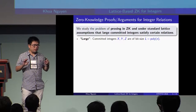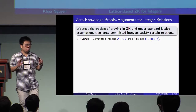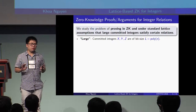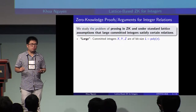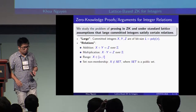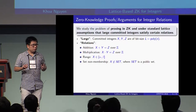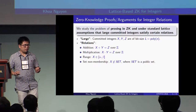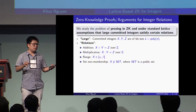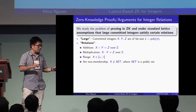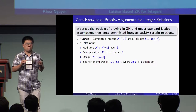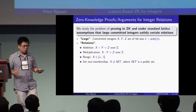By large integer we mean the committed integers X, Y, and Z are of arbitrary polynomial bit size — L equal to poly of N, where N is the security parameter. We consider addition and multiplication relations where we have committed integers X, Y, and Z and we want to prove that X plus Y equals Z over the integers, or X times Y equals Z over the integers.